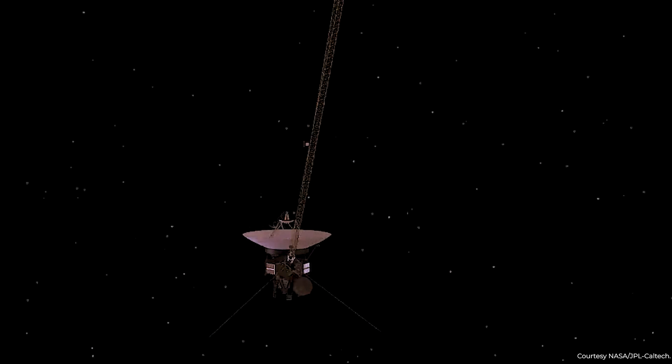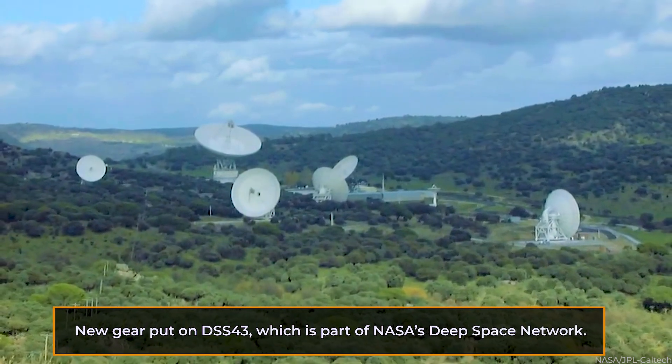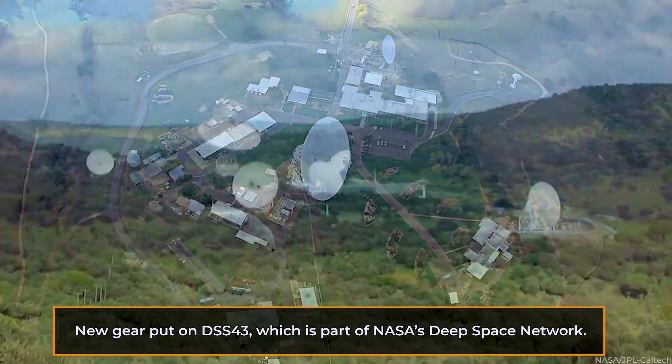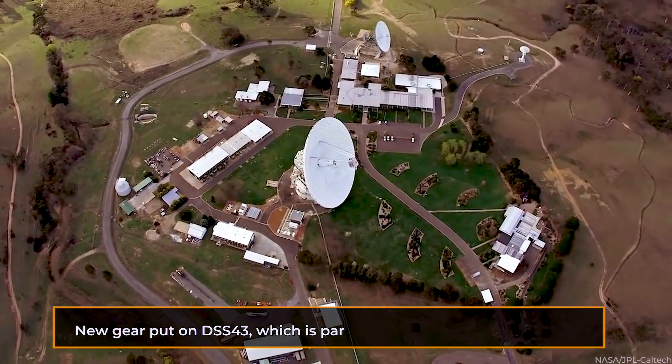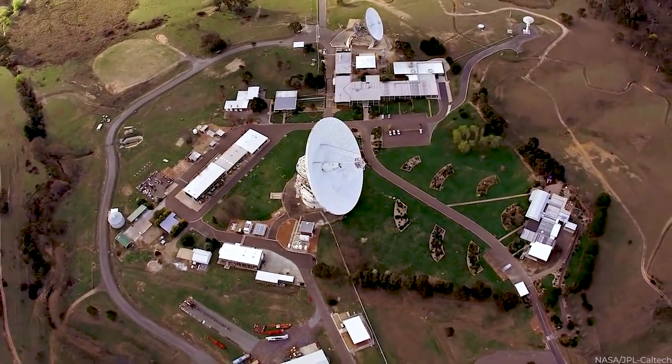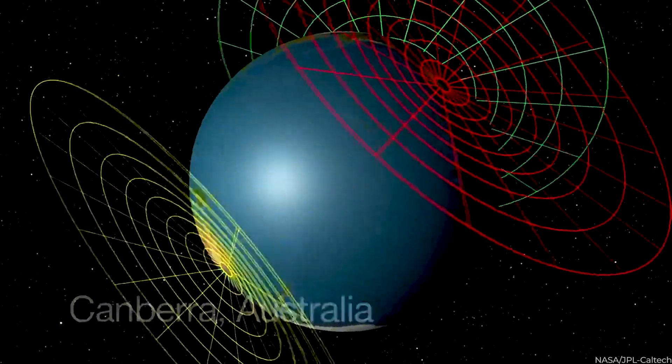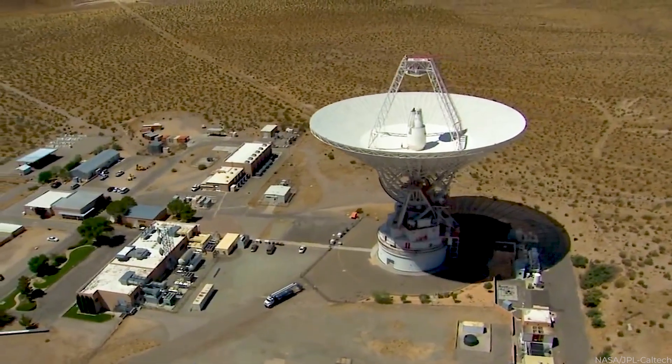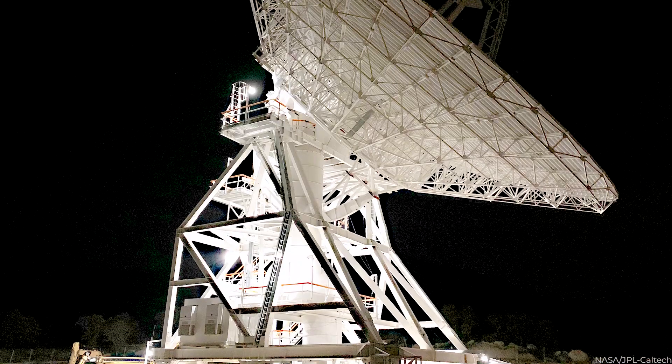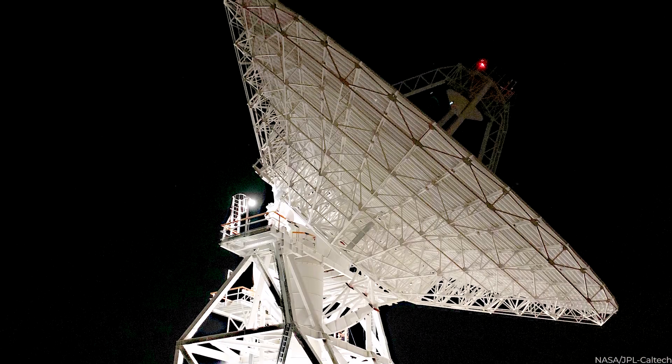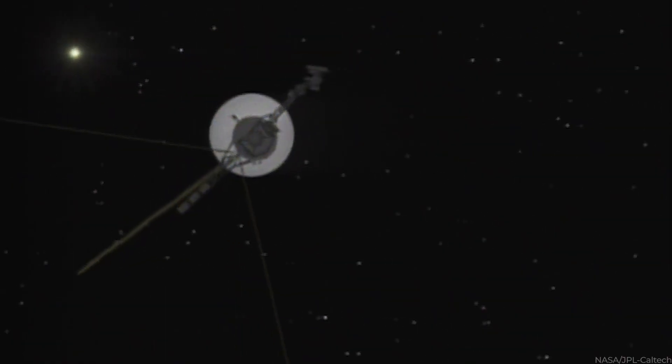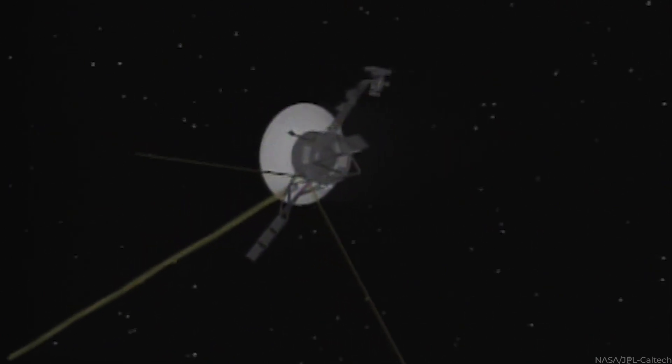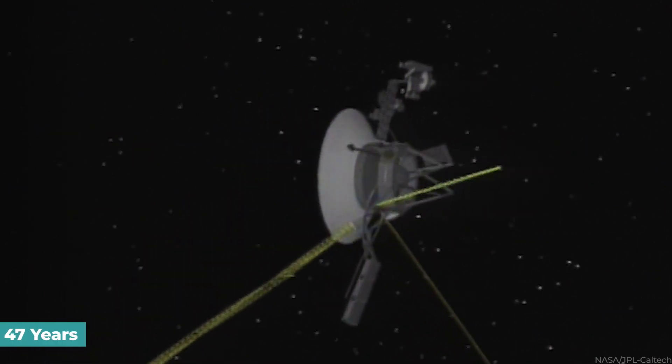The latest contact to Voyager 2 was a test of new gear put on DSS-43, which is part of NASA's Deep Space Network, a collection of radio antenna facilities located in Canberra, Goldstone, California, and Madrid, Spain, and scattered evenly around the world. DSS-43 received two new radio transmitters as part of the renovations. One of them, used to communicate with Voyager 2, hasn't been replaced in almost 47 years.